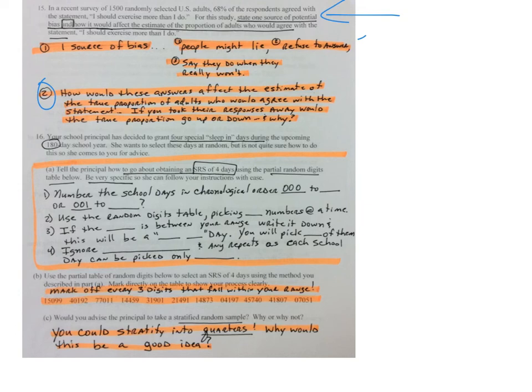You will pick [blank] of them. You're going to ignore [blank] and any repeats, as each school day can be picked only [blank]. And then finally B: you have to mark off every three digits that fall within the range.